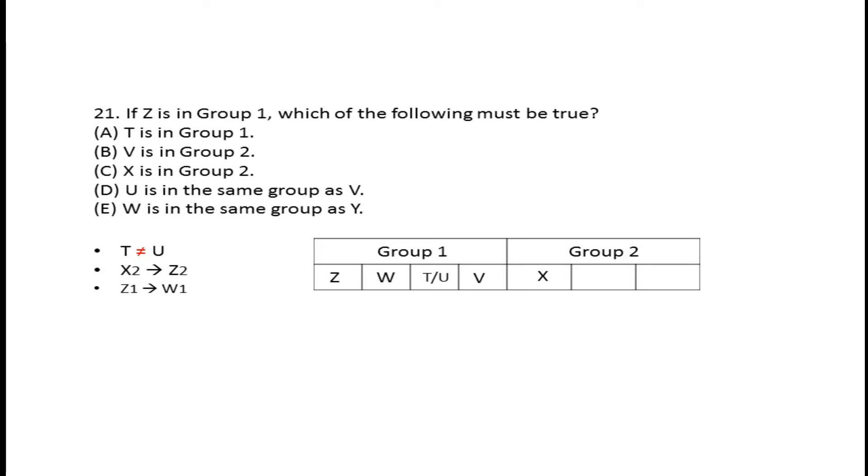Z should be in Group 1, not Group 2. So we've already reached a contradiction. If we place V in Group 1, it creates a conflict. Therefore, V cannot be in Group 1.